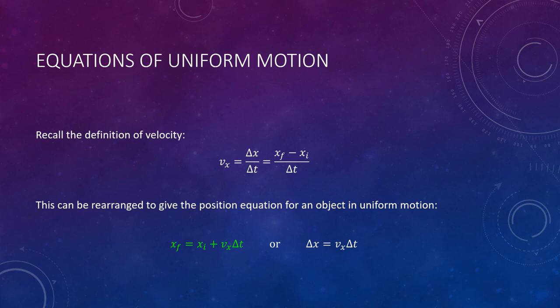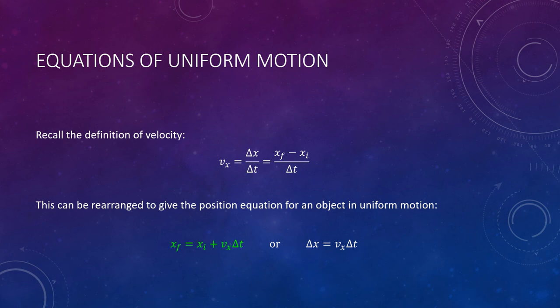The velocity of an object in uniform motion tells us the amount by which its position changes during each time interval. An object with a velocity of 20 meters per second changes its position by 20 meters every second — by 20 meters during the first second, another 20 the next second, and so on. We say that position is changing at the rate of 20 meters per second. Thinking of velocity as a rate will help you develop an intuitive understanding of the connection between velocity and position.